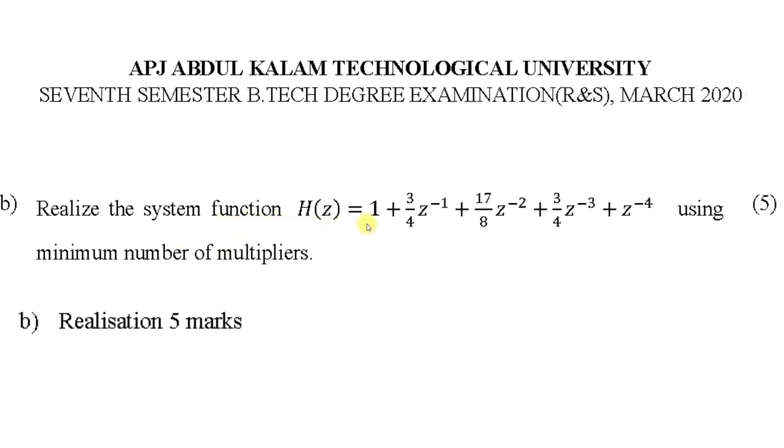To realize the system function H(z) using minimum number of multipliers, this type of question is almost sure. Whenever you see minimum number of multipliers, you check whether H(z) is symmetric. Here we can see with respect to 17/8, 3/4, 3/4, 1, 1, so it is symmetric.